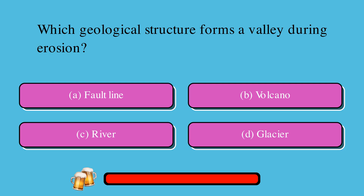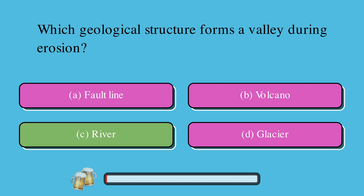Which geological structure forms a valley during erosion? A. Fault line, or B. Volcano, or C. River, or D. Glacier? The correct answer is C. River.